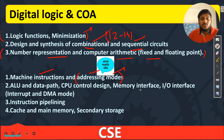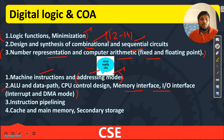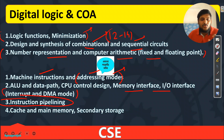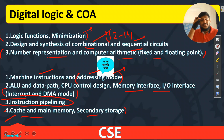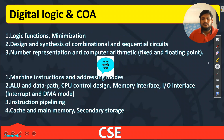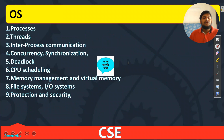Then ALU datapath, CPU control design, memory interface, IO interface, interrupt, DMA mode — very important topics. The most important topic is Instruction Pipelining. Then Cache memory, main memory, and secondary storage — study basic theoretical things. For cache, solve numericals. That covers COA for CSC.